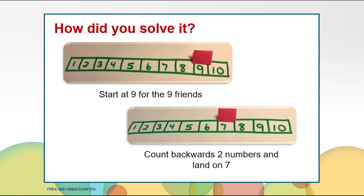Maybe you used a one to ten number track. You put your counter on the number nine because there were nine friends skateboarding with Aaliyah. Next, you moved your counter two spaces backward for the two friends that went home. You landed on seven, which means there are seven friends still skateboarding with Aaliyah.